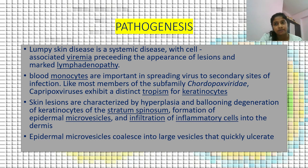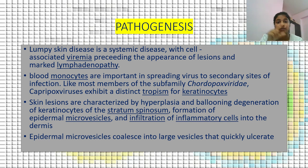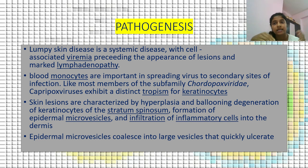Lumpy skin disease is a systemic disease with cell-associated viremia preceding the appearance of lesions and marked lymphadenopathy. Blood monocytes are important in spreading the virus to secondary sites of infection. Like most members of the Chordopoxviridae, Capripoxviruses exhibit a distinct tropism for keratinocytes. Skin lesions are characterized by hyperplasia and ballooning degeneration of keratinocytes, formation of epidermal microvesicles, and infiltration of inflammatory cells into the dermis. Epidermal microvesicles then coalesce into larger vesicles that quickly ulcerate.